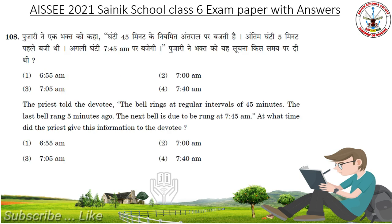The priest told the devotee: the bell rings at regular intervals of 45 minutes. The last bell rang 5 minutes ago. The next bell is due to be rung at 7:45 am. At what time did the priest give this information to the devotee? Answer is 7:05 am.